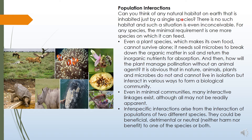Can you think of any natural habitat on earth that is inhabited by just a single species? There is no such habitat and such a situation is even inconceivable. For any species, the minimum requirement is one more species on which it can feed. Even a plant species which makes its own food cannot survive alone — it needs soil microbes to break down organic matter and return inorganic nutrients for absorption, and needs an animal agent for pollination.